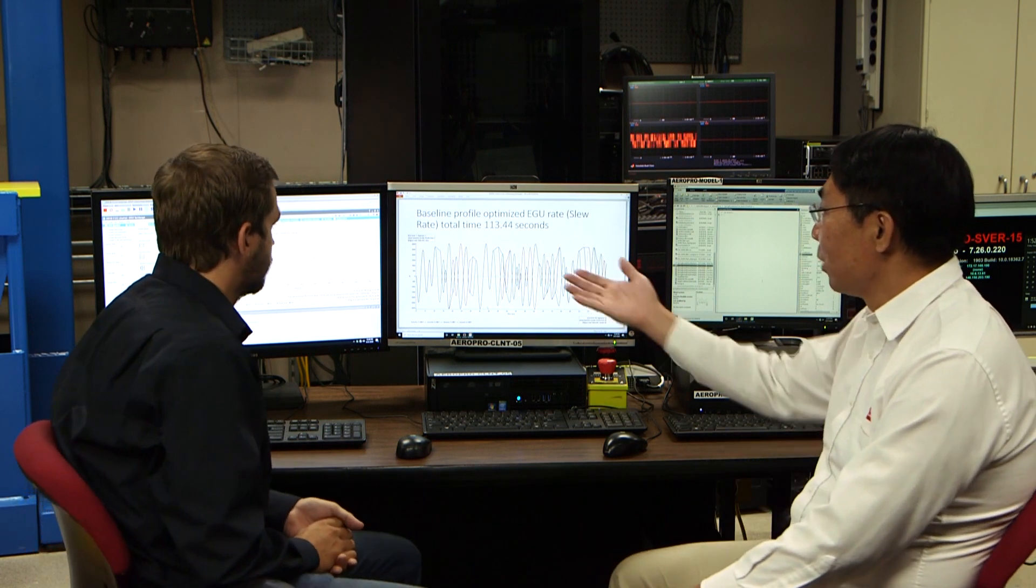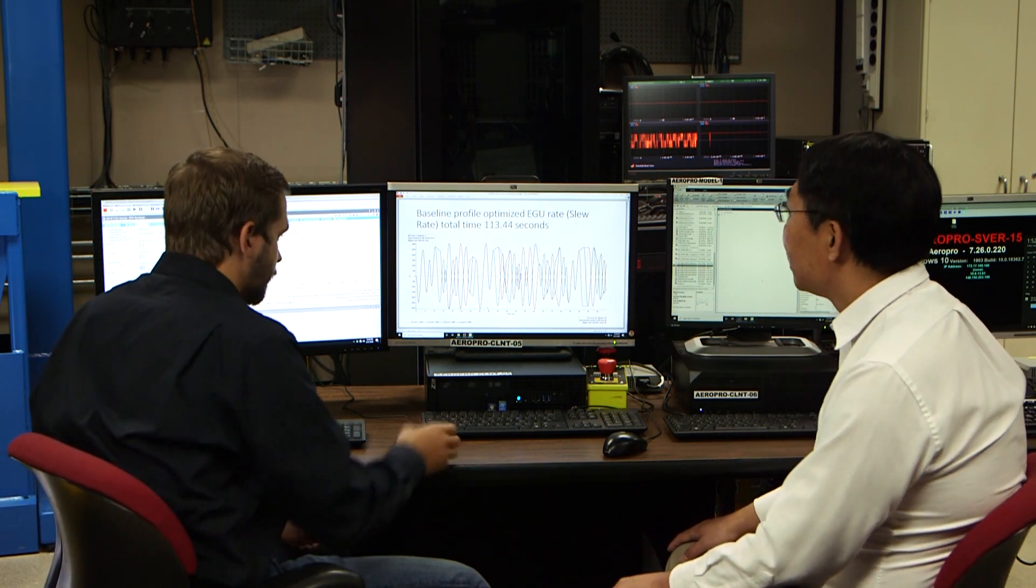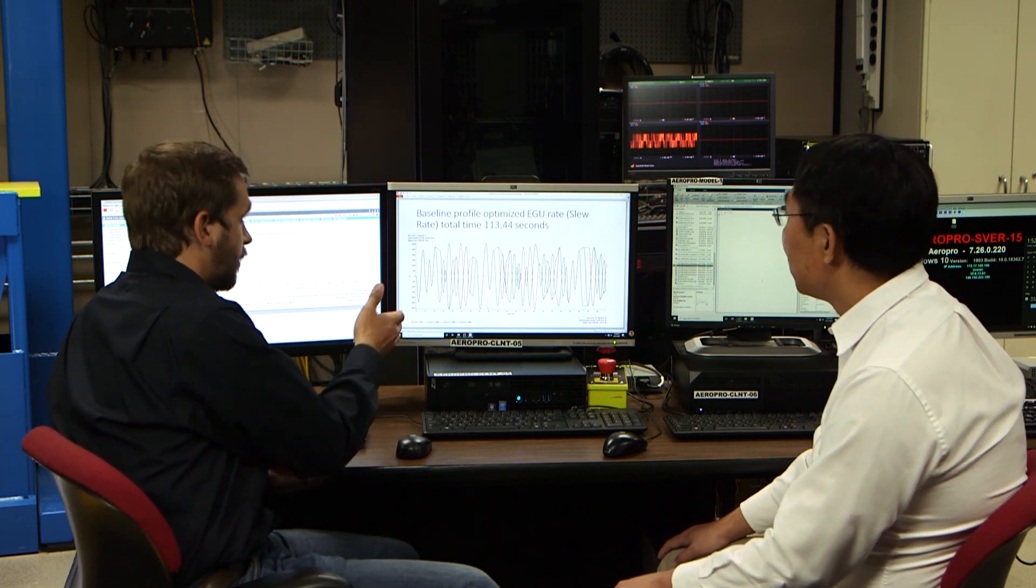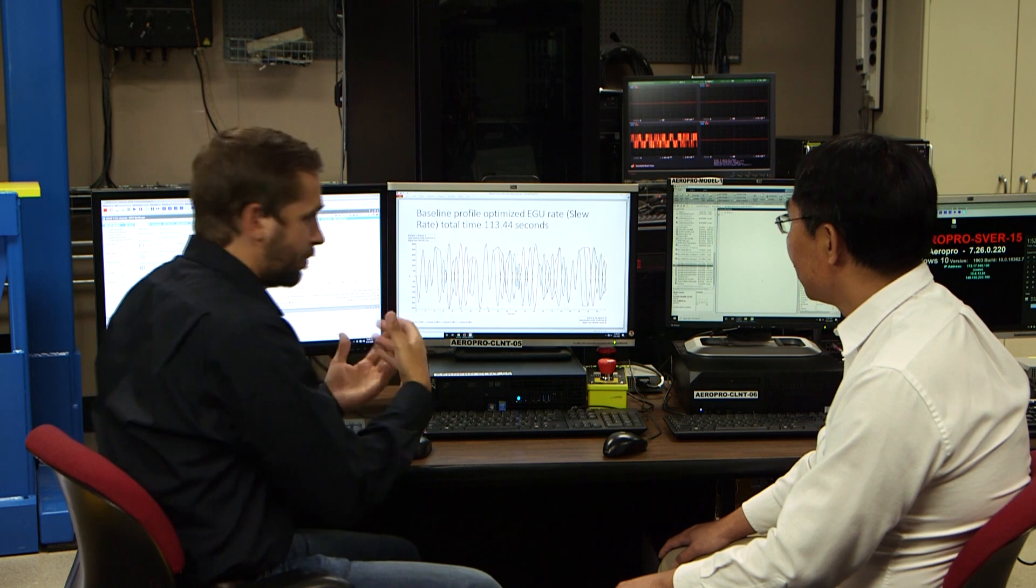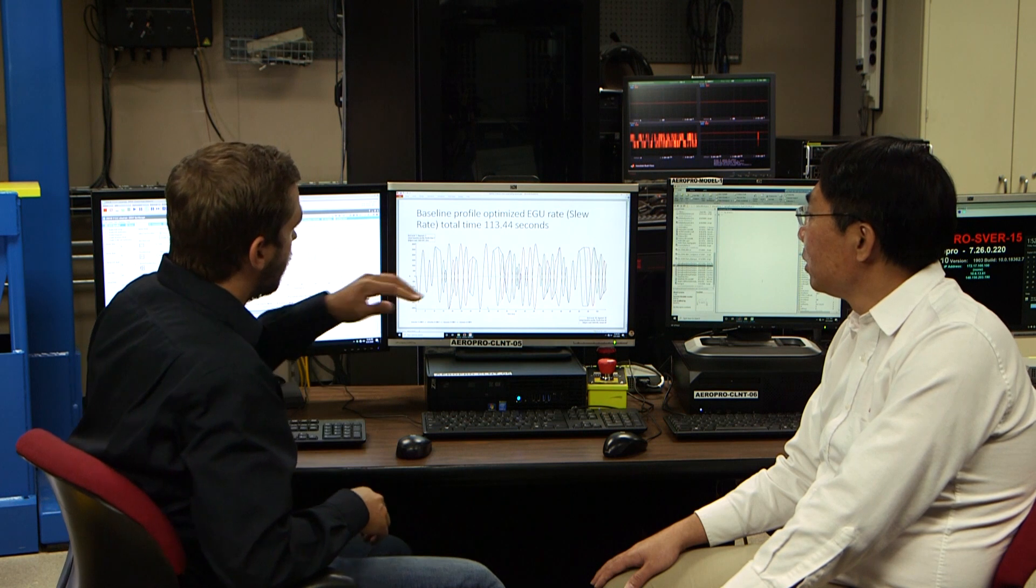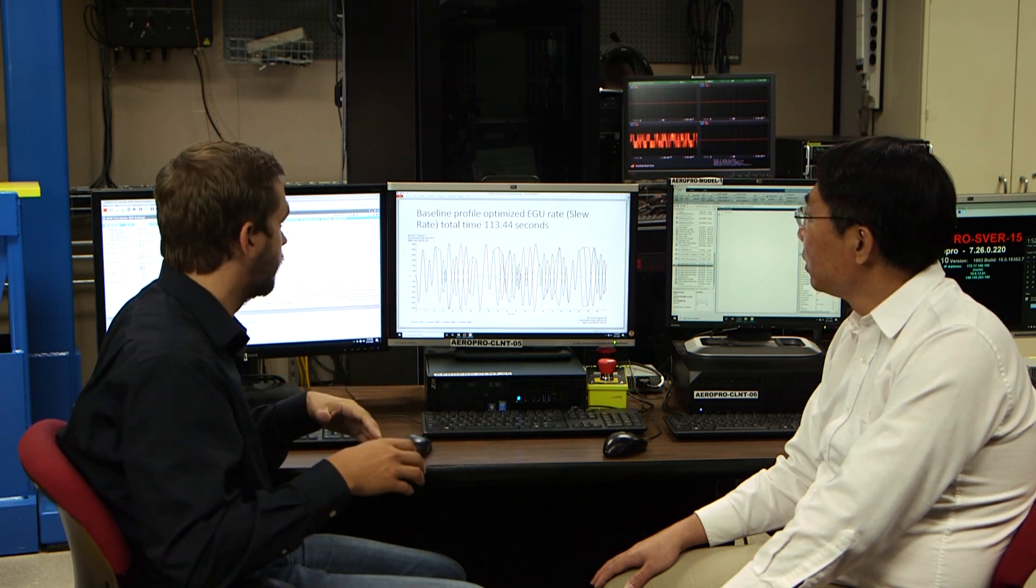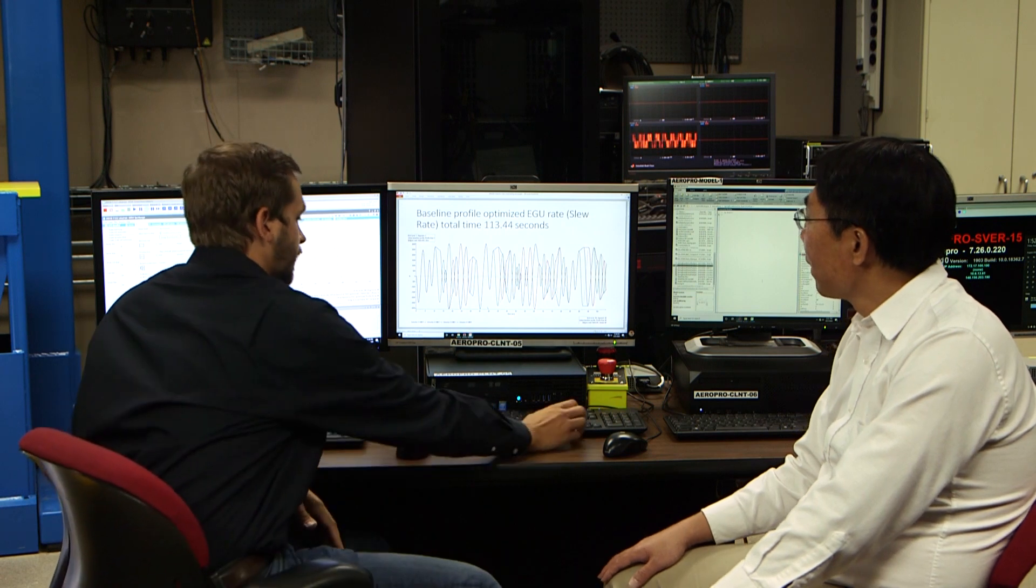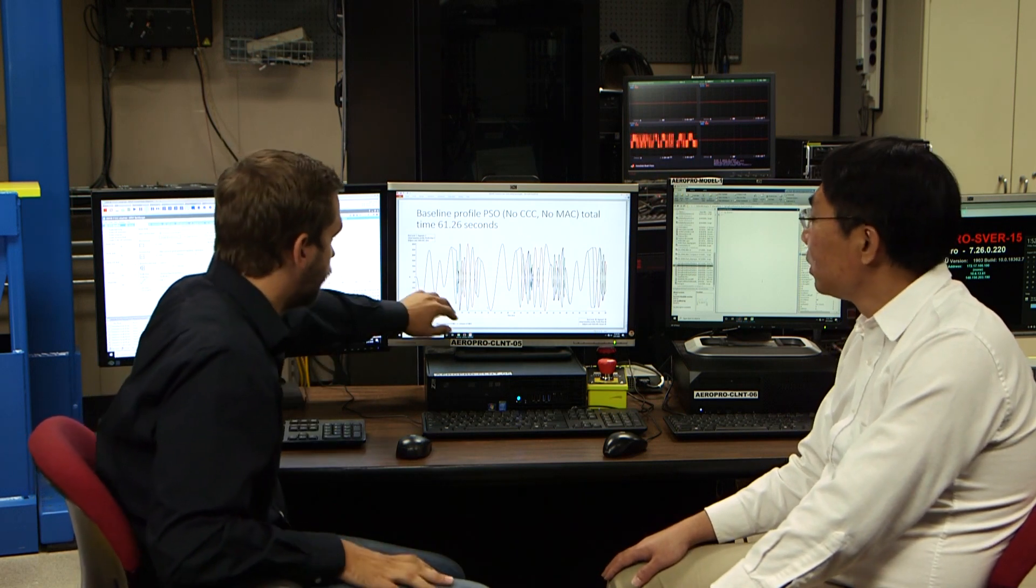Welcome back. We're back and PSO looks like it's converged. Do you want to take a look at the results here? Yes. I can see there the profile definitely is different now. So I've gone ahead and taken some screenshots actually and brought over the total times as well, just so that we have a better way to look at it here. So what we had before was just our baseline profile using a slew rate to get an estimation of the transition times. We knew this was not going to be correct. So we'll be able to see really how different it is after this optimization. Our initial profile had a total time of 113.44 seconds. And then after the optimization, we brought it down to a total time of 61.26 seconds.